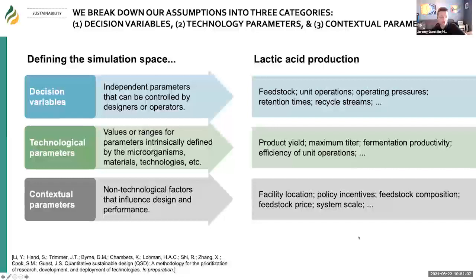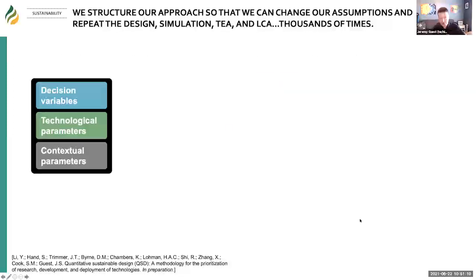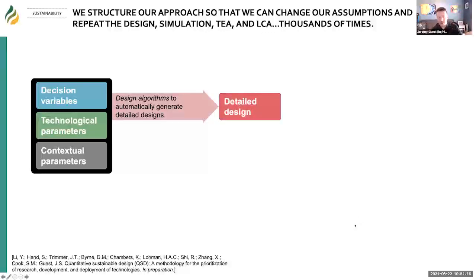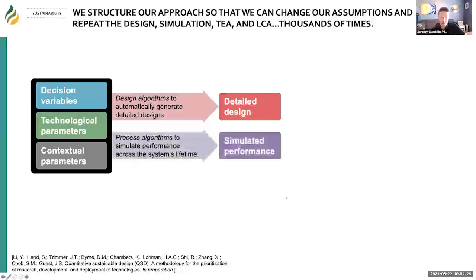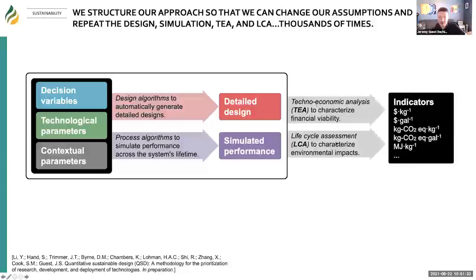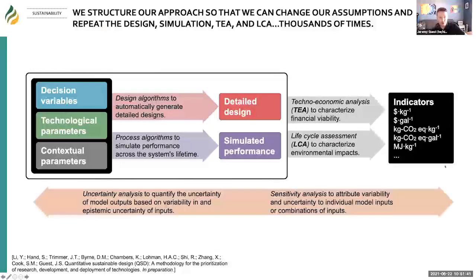We break it down into those categories and want to explore them further. We develop design algorithms in BioSteam to automate the detailed design process. If you pick a set of decision variables and make assumptions about technology and contextual parameters, we get a detailed design. We automate the simulation, the techno-economic analysis, and the life cycle assessment to get indicators like dollars per kilogram or dollars per gallon. We run these models many thousands of times so we can understand uncertainty and the sensitivity of our results to specific assumptions.